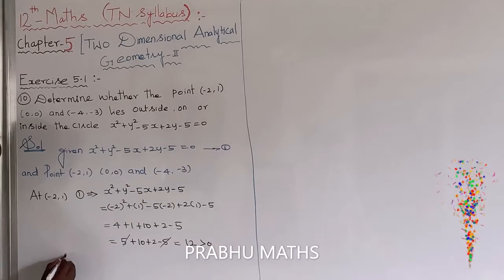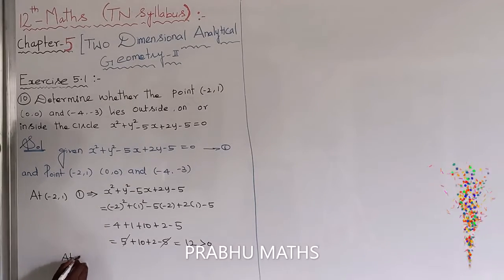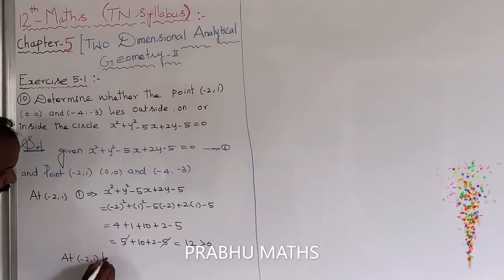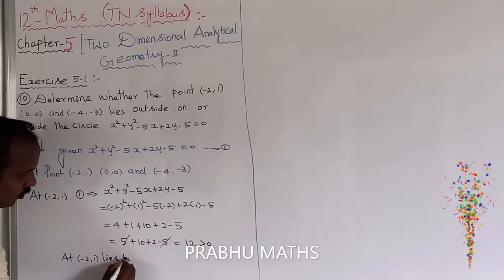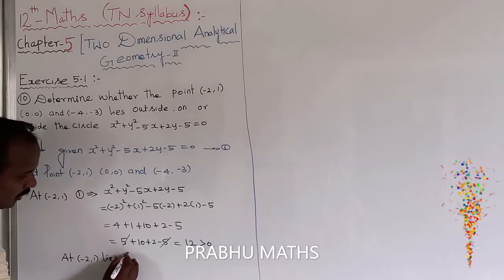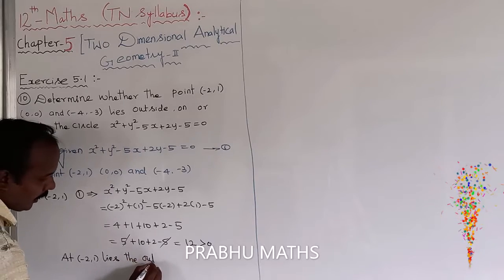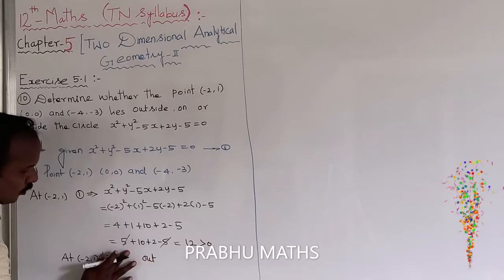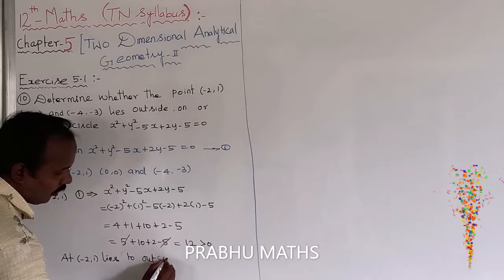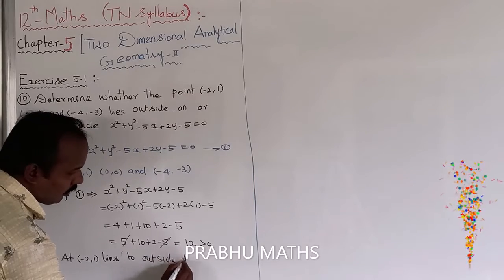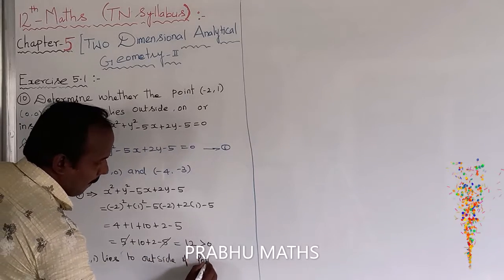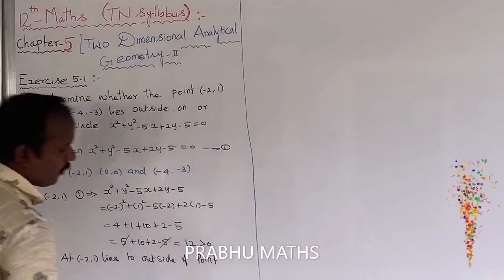So at the point minus 2 comma 1, the point lies outside of the circle. The first point is completed.